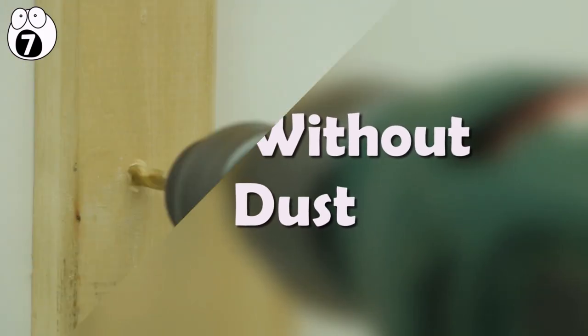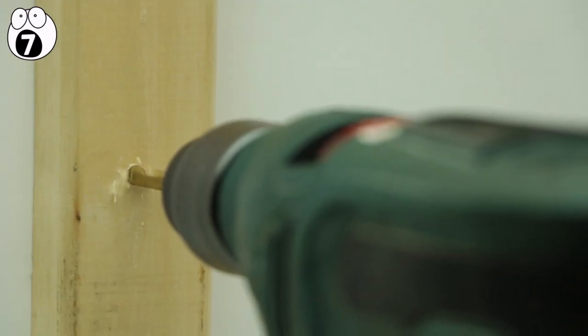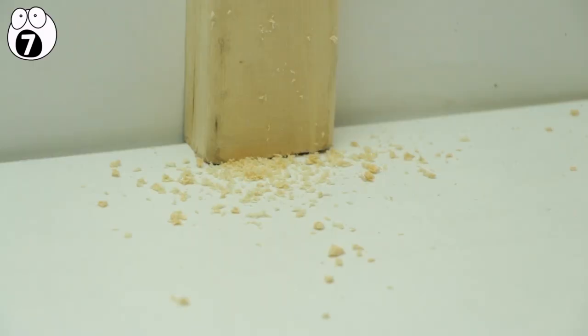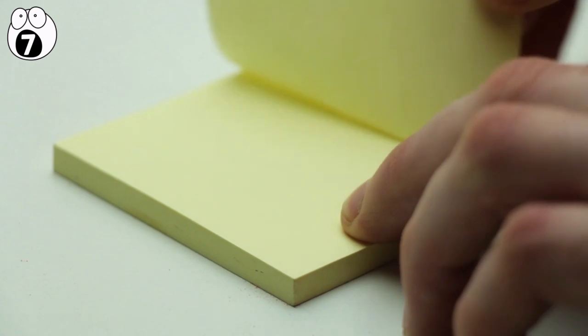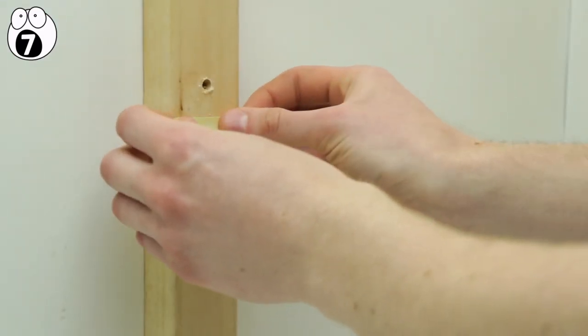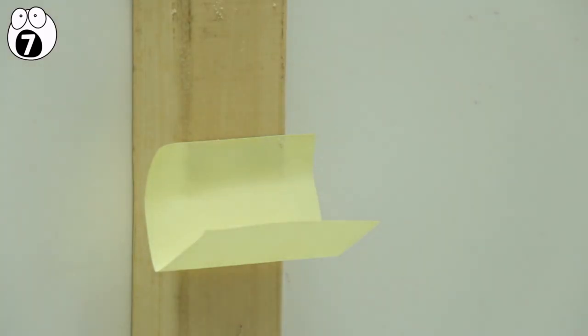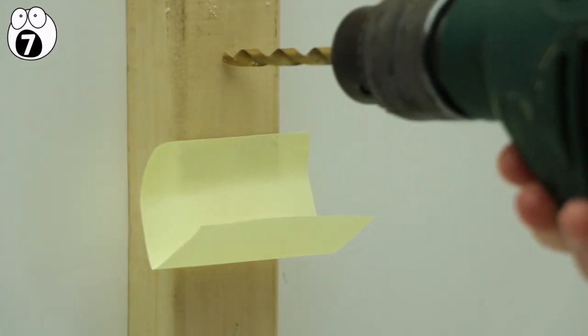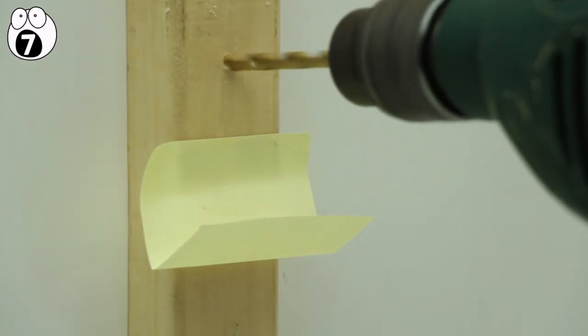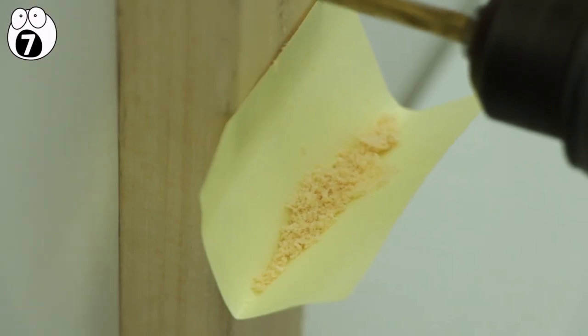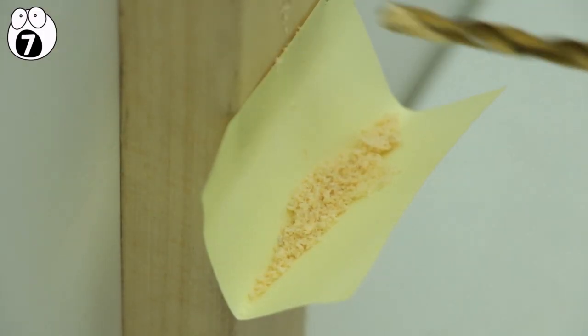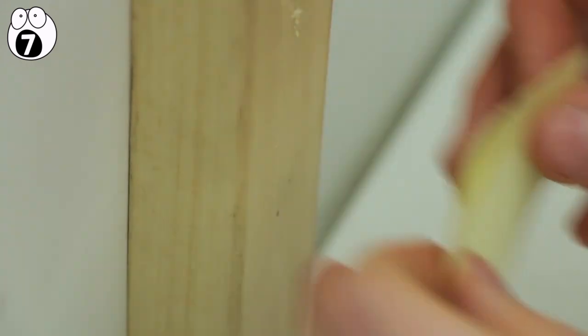Number 7: Drill Without Dust. Drilling is a messy task. The dust goes everywhere. Save yourself from a huge messy cleanup by using post-it notes. All you have to do is stick one of these underneath where you're going to drill and then fold the bottom upwards so that it creases. Now simply let this folded area hang and go ahead and drill the hole. This makeshift dust pan will catch all the falling dust. And once you're done, all you need to do is remove it from the wall and chuck it in the trash. Simple.